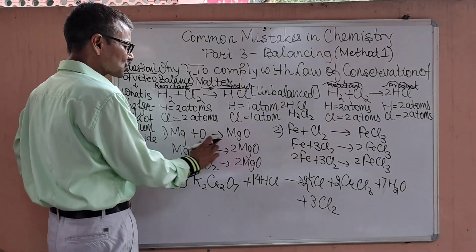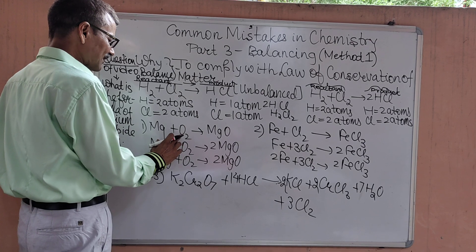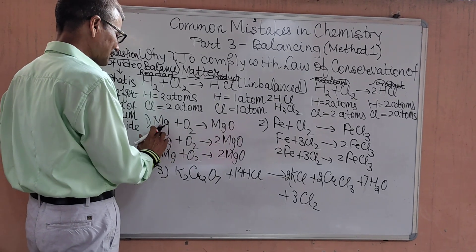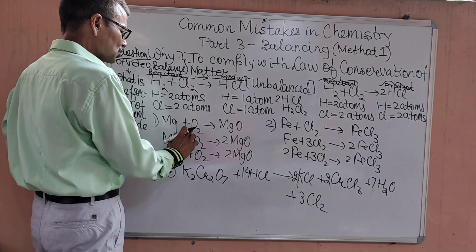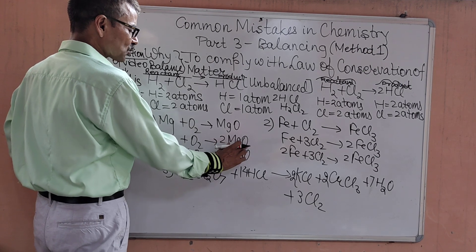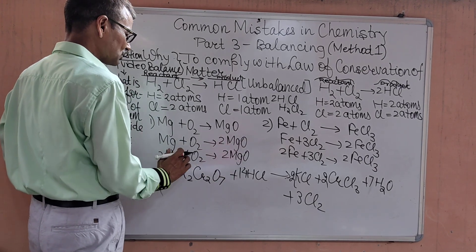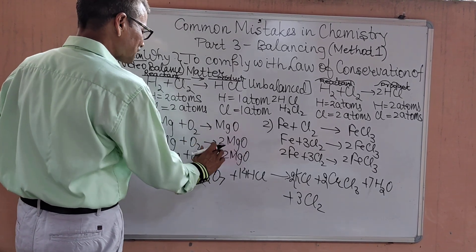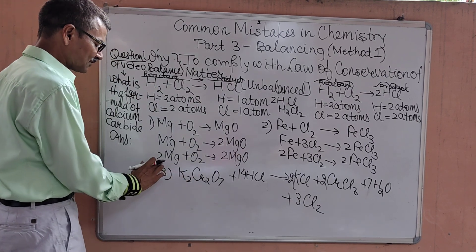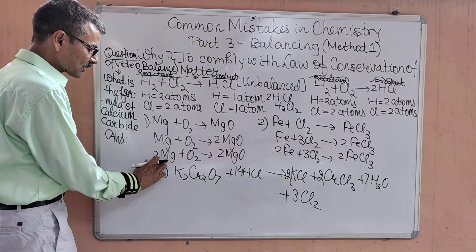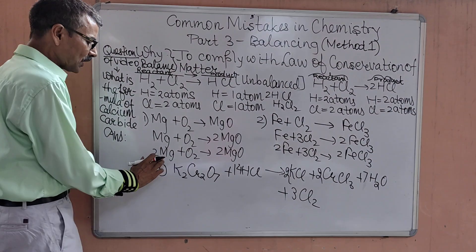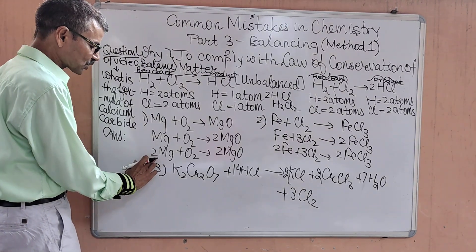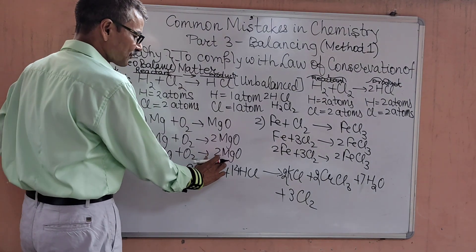Now come to the problem. Mg plus O2 giving you MgO. If we observe and analyze, oxygen here is not balanced, magnesium is balanced. To balance the oxygen, we multiply this product magnesium oxide by 2. Now the oxygen is balanced but magnesium is not balanced. So in the next step, we multiply this magnesium by 2.